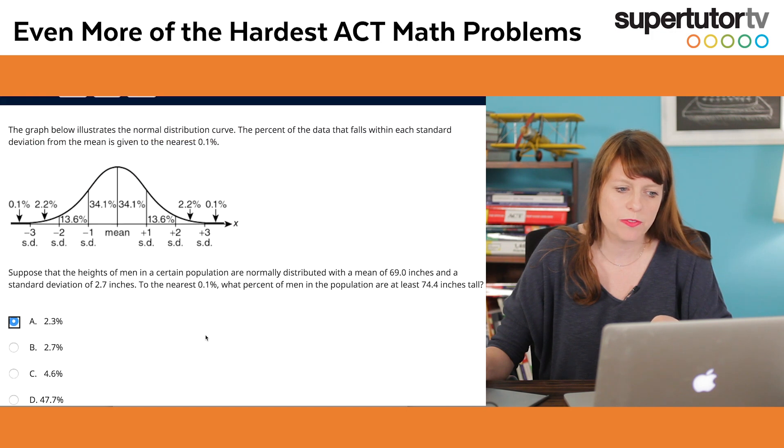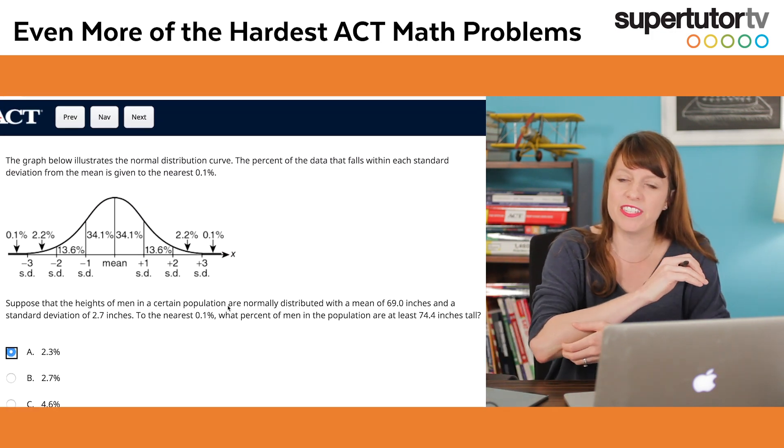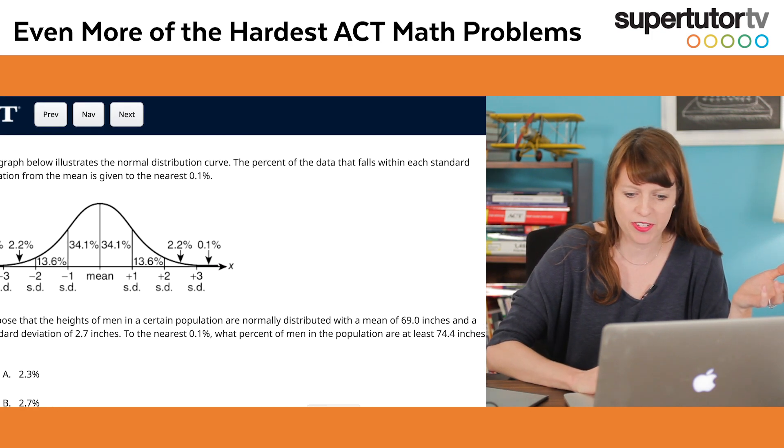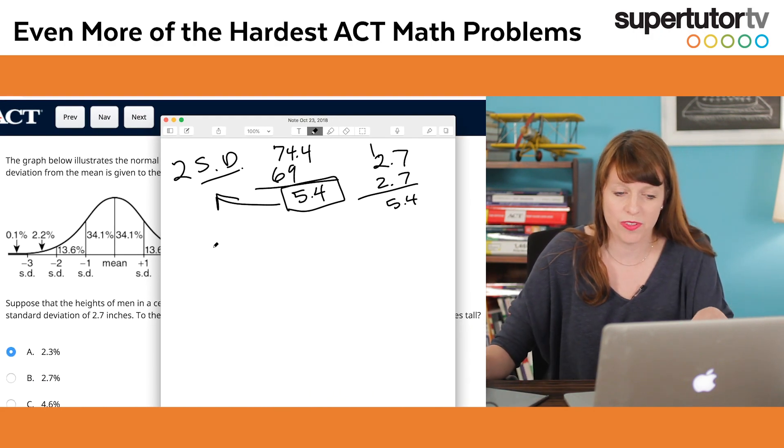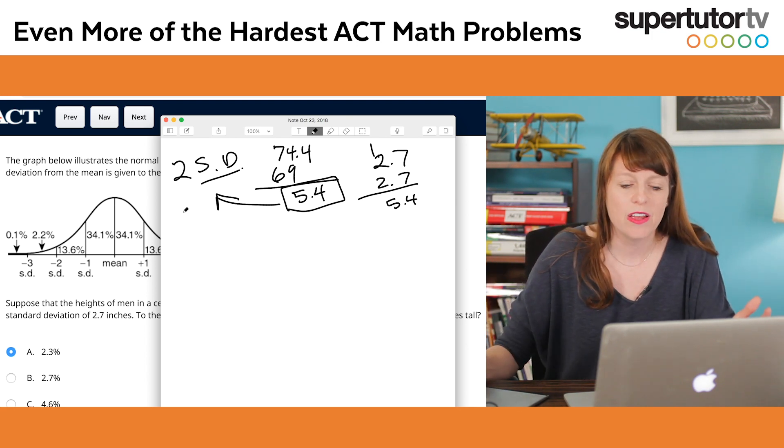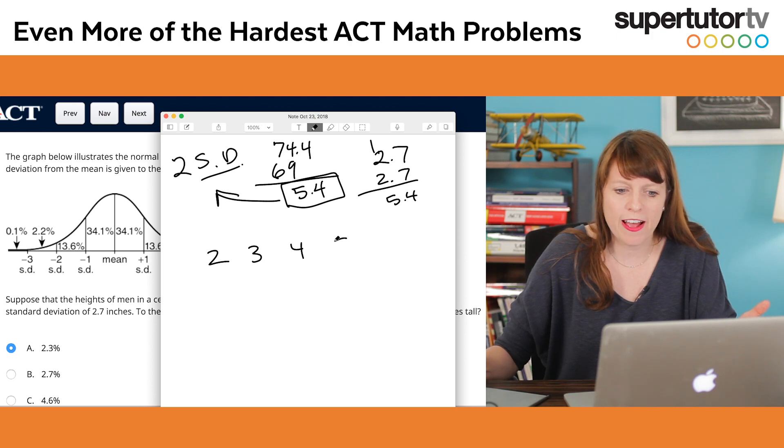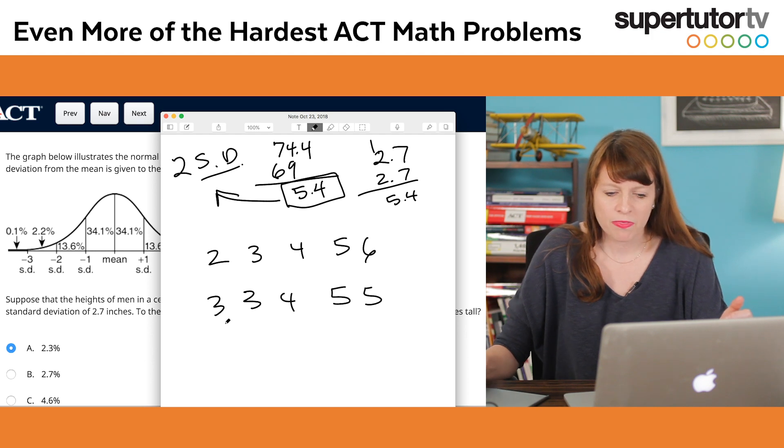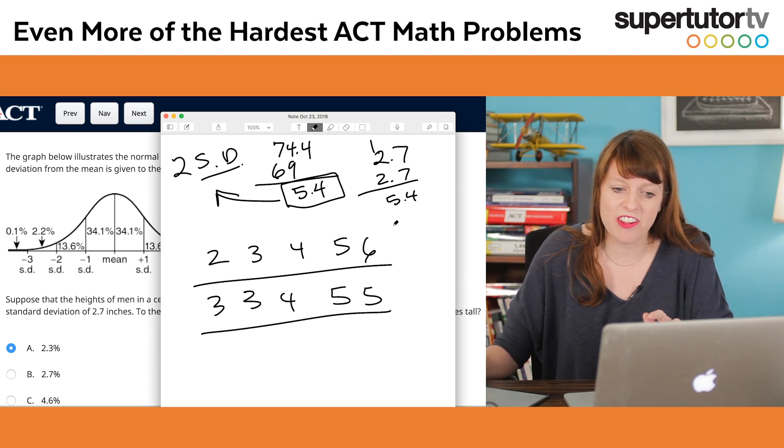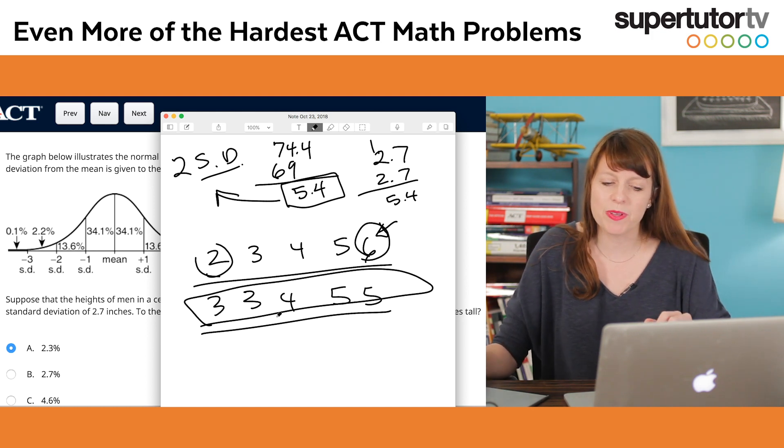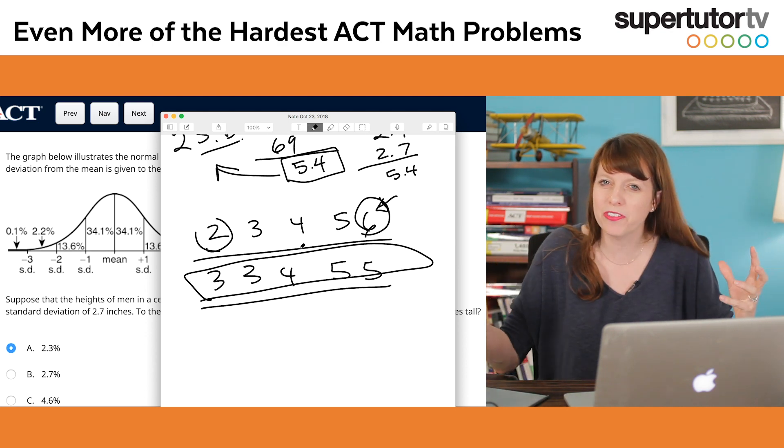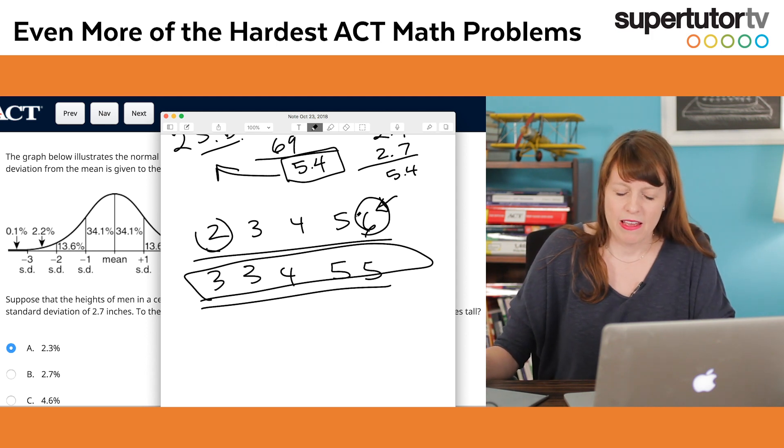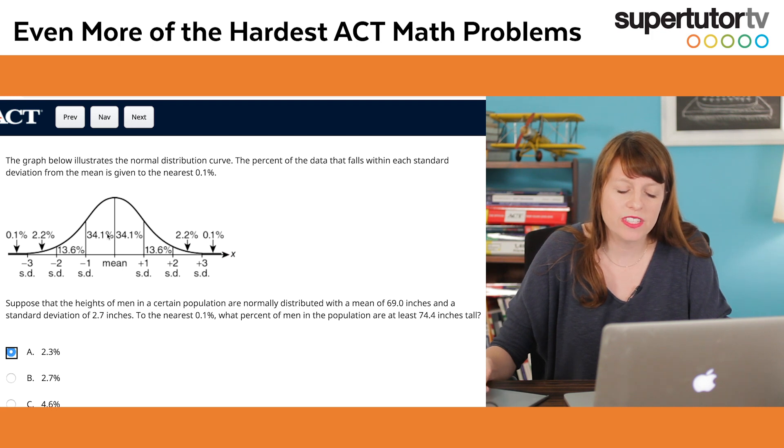The other kind of problem that you're going to have to be responsible for doing when you have standard deviation are problems that might give you sets of data and ask you to say which one has the greatest standard deviation. For example, I might have 2, 3, 4, 5, 6, and then I might have 3, 3, 4, 5, 5. Now both of these have the same mean, but they don't have the same standard deviation. This one is going to have a greater standard deviation because the numbers are spaced farther apart. And this one's going to have a tighter standard deviation because more of the data is clumped together. So that's how we measure standard deviation. It's how far apart is our data.